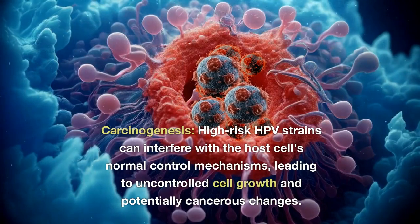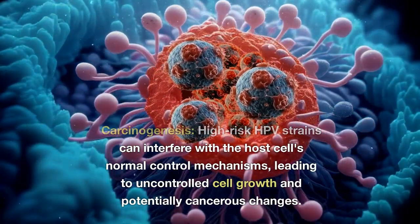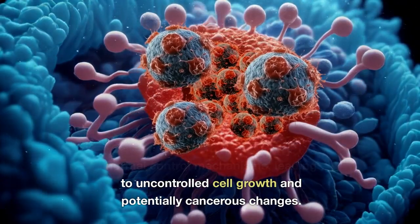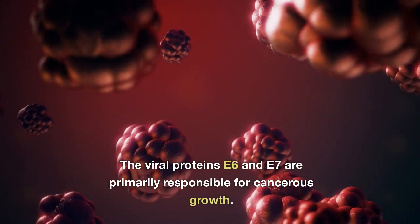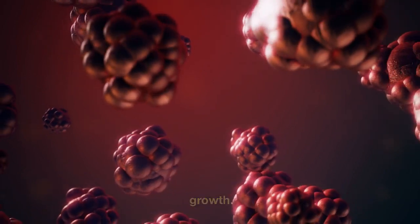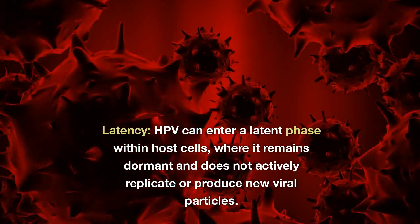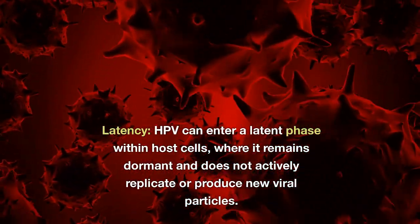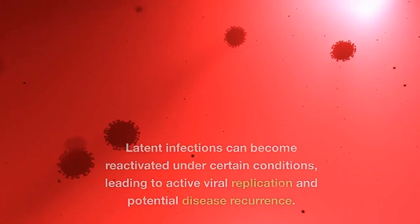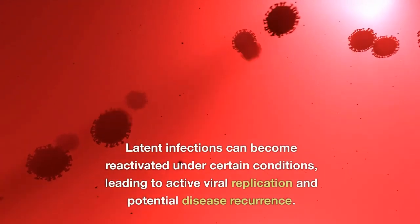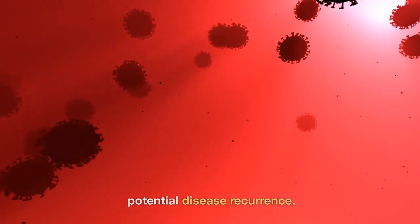High-risk HPV strains can interfere with the host cell's normal control mechanisms, leading to uncontrolled cell growth and potentially cancerous changes. The viral proteins E6 and E7 are primarily responsible for this cancerous growth. HPV can also enter a latent phase within host cells, where it remains dormant and does not actively replicate. Latent infections can become reactivated under certain conditions, leading to active viral replication and potential disease recurrence.